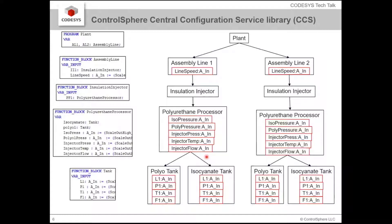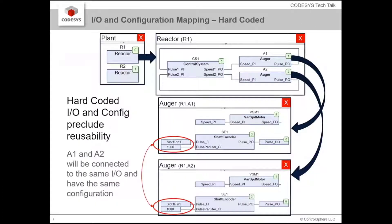Fortunately, with CodeSys they've got some cool features that allow us to distribute our variables but still have central services like object-oriented alarming. So the problem is: when you have a distributed system like this — a plant with two reactors, each reactor has two augers, and each auger has a variable speed motor and a shaft encoder built into it. In the old days we would hard-code the IO for this.